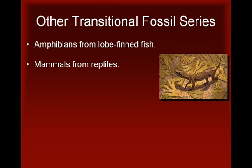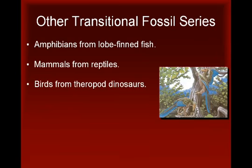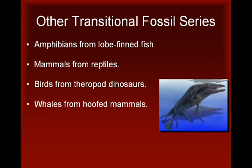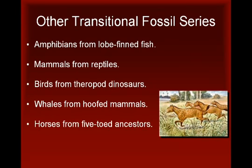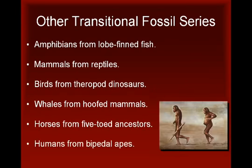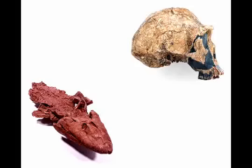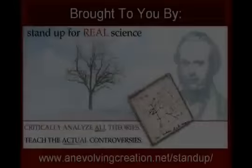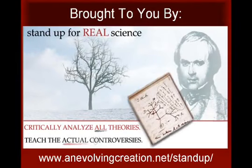Additional series include the evolution of whales from hoofed mammals, the evolution of horses from five-toed ancestors, and, of course, the evolution of humans from bipedal apes. The list of transitional fossil series truly goes on and on. And these observations only make sense using the real science of evolution. This video lesson has been brought to you by Stand Up For Real Science, a website devoted to defending the teaching of mainstream science in public school science classrooms. Visit us at www.anevolvingcreation.net.